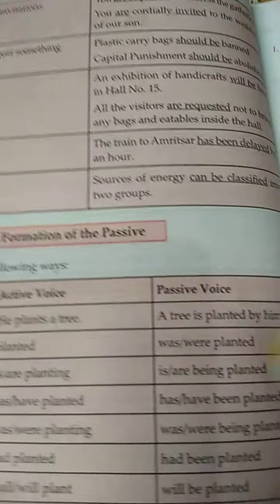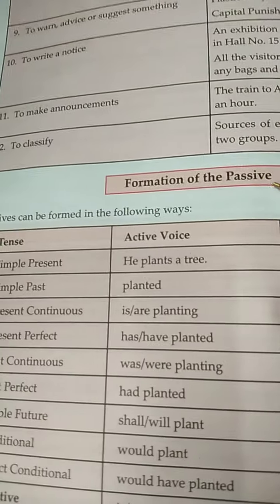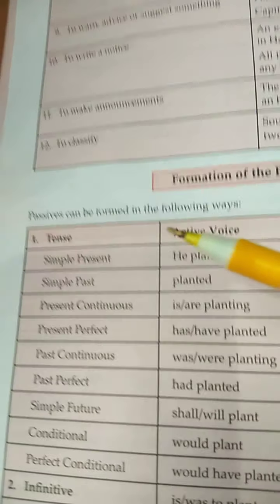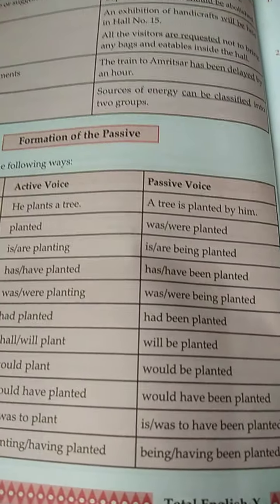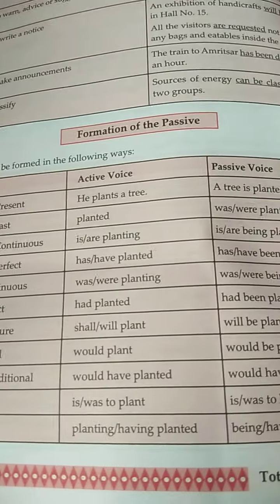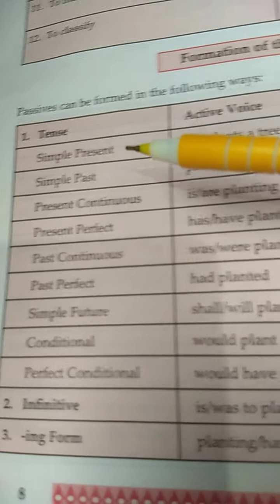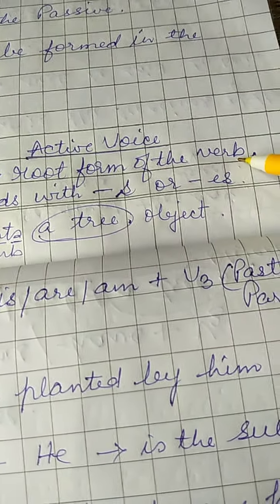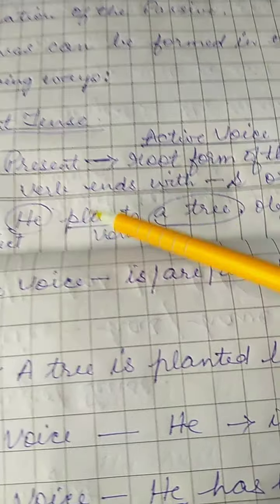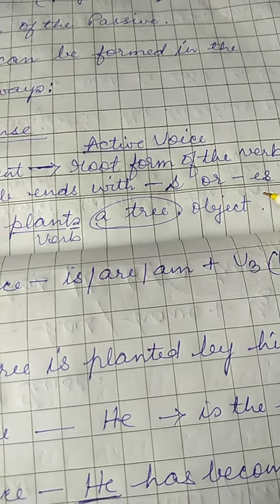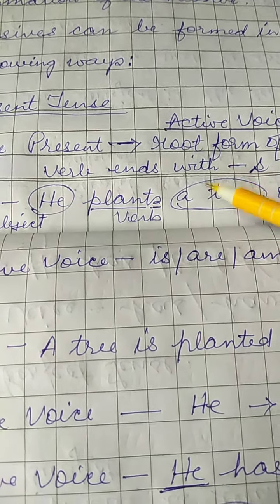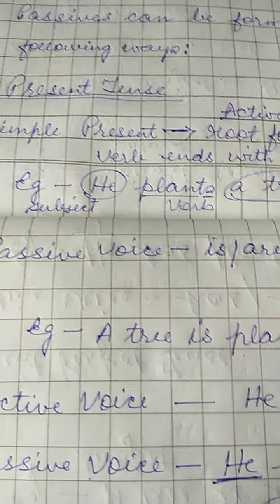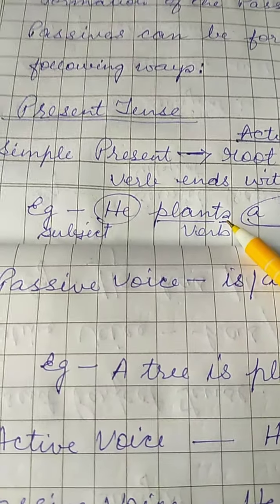These are the conditions where we use the verb in the passive voice. Now come to the formation of the passive — how passives are formed. You can see it in the table. Let us start with the present tense. We will do first the simple present tense. In the simple present tense, active voice, we have the root form of the verb, or the verb ends with S or E-S. For example: 'He plants a tree.' The verb is 'plants,' ending in S. Subject is 'he,' 'plants' is the verb, and 'a tree' is the object.